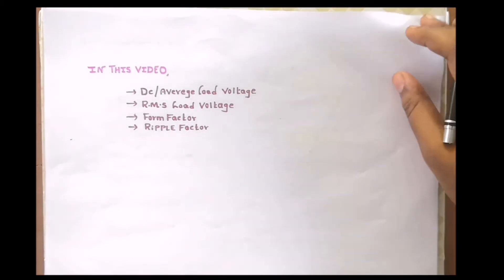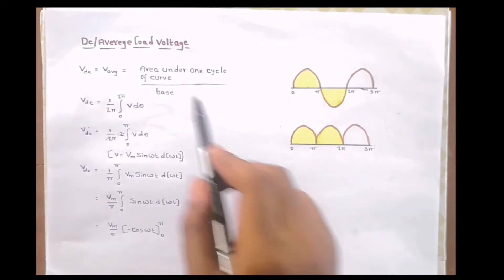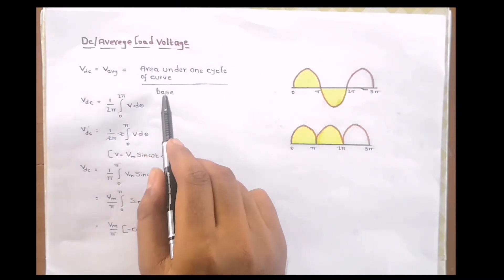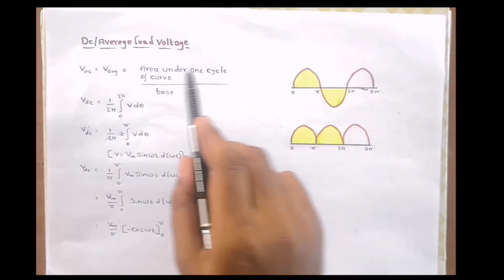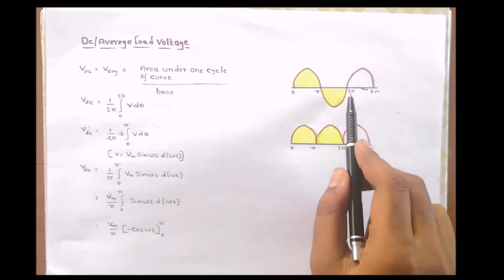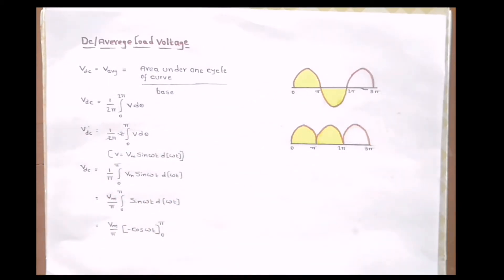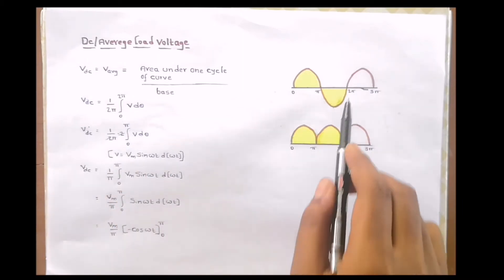First let us obtain the value of average load voltage of a full wave rectifier. The average load voltage is given as the area under one cycle of the curve divided by the base. Area under one cycle means the area between the points 0 and 2π, and the area under a curve between two points is found by evaluating a definite integral between those two points.